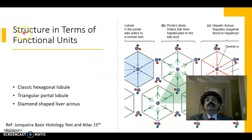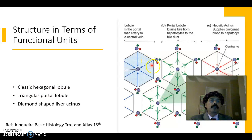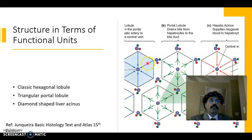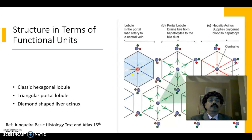In terms of functional unit, we have the classic hexagonal lobule. Here is the central vein. Hepatic sinusoids are fed by the portal vein and the hepatic artery, and the blood goes towards the central vein, ultimately going to the hepatic vein and then to the inferior vena cava. This is the most commonly practiced functional unit in terms of liver structure.